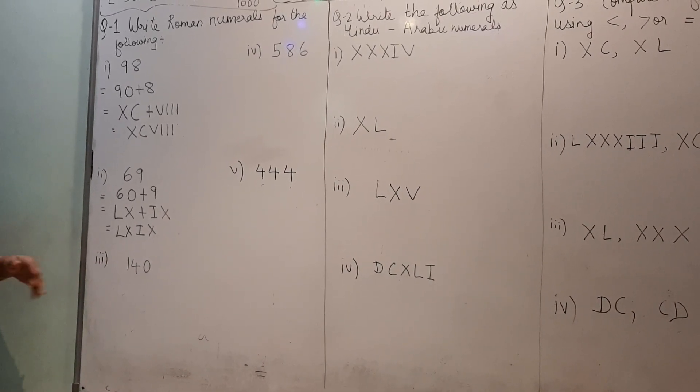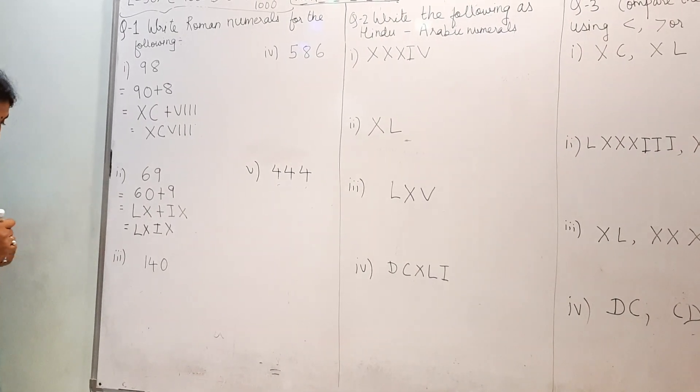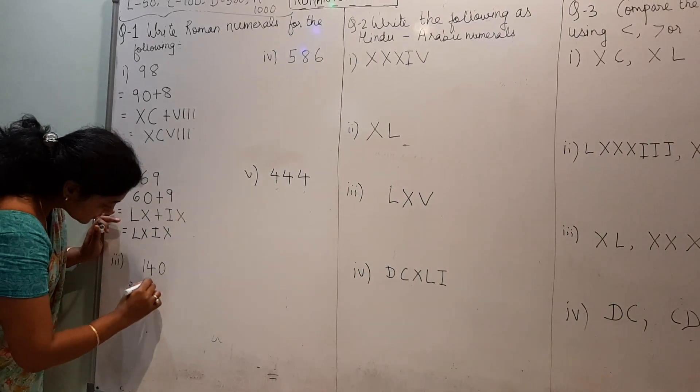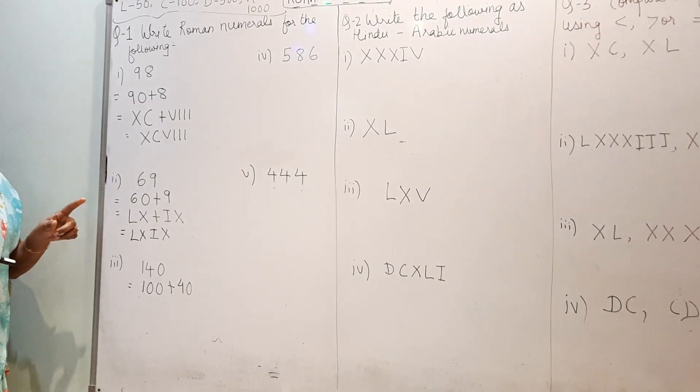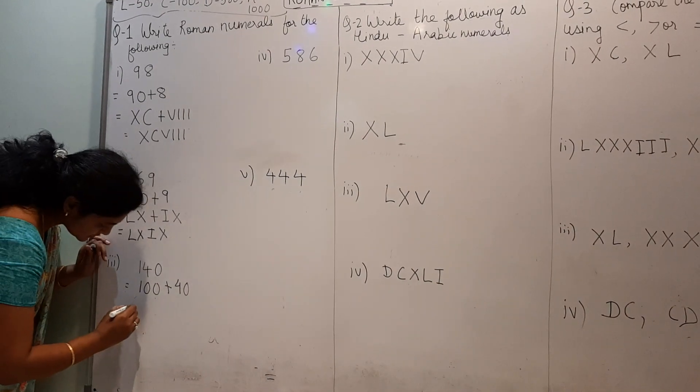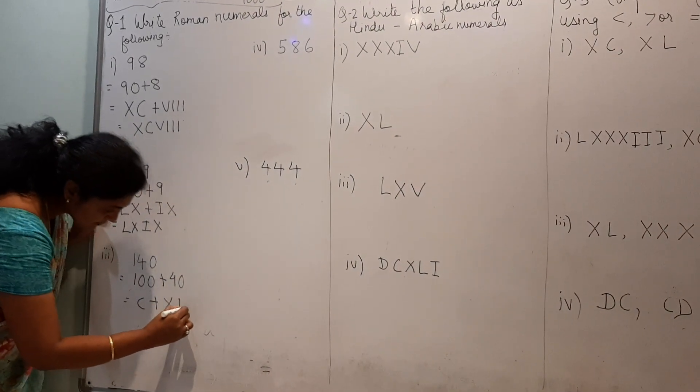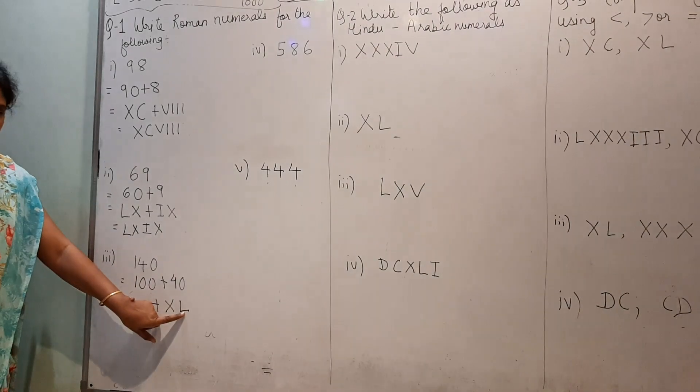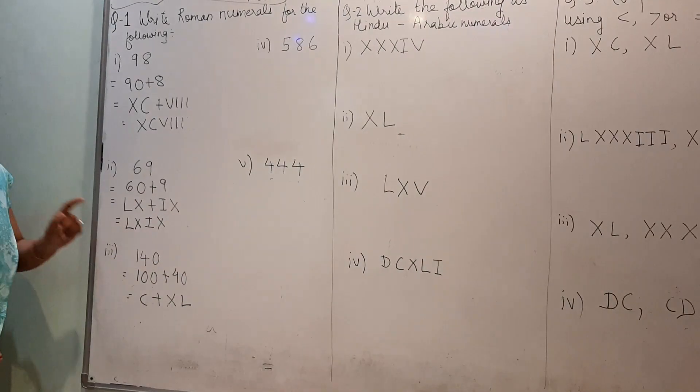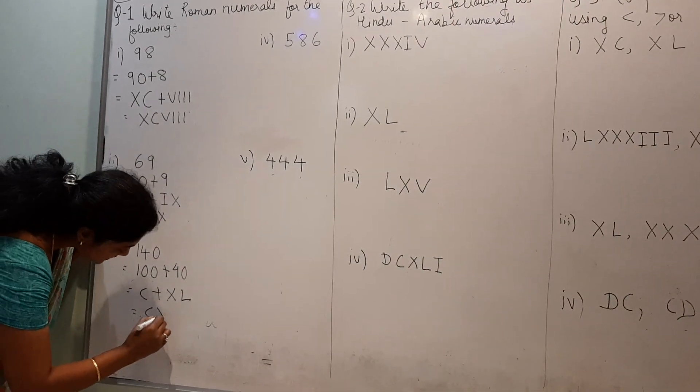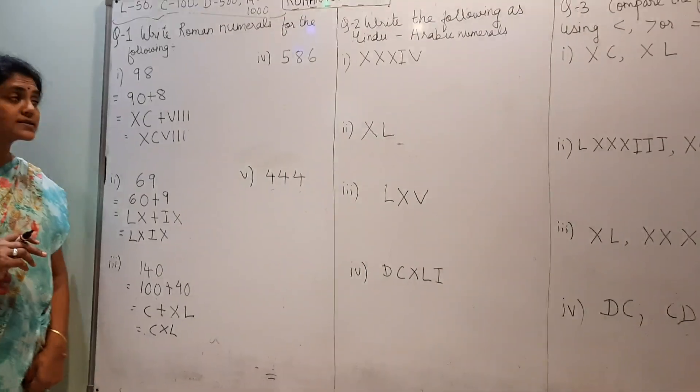Similarly, third one, 140, break and write, convert into roman numeral using the rules. Now, 140, you can write as 100 plus 40. 100 is represented by C plus 40, you can represent as XL. L is 50, this is 10, 50 minus 10, 40. Combine it, this will be CXL.